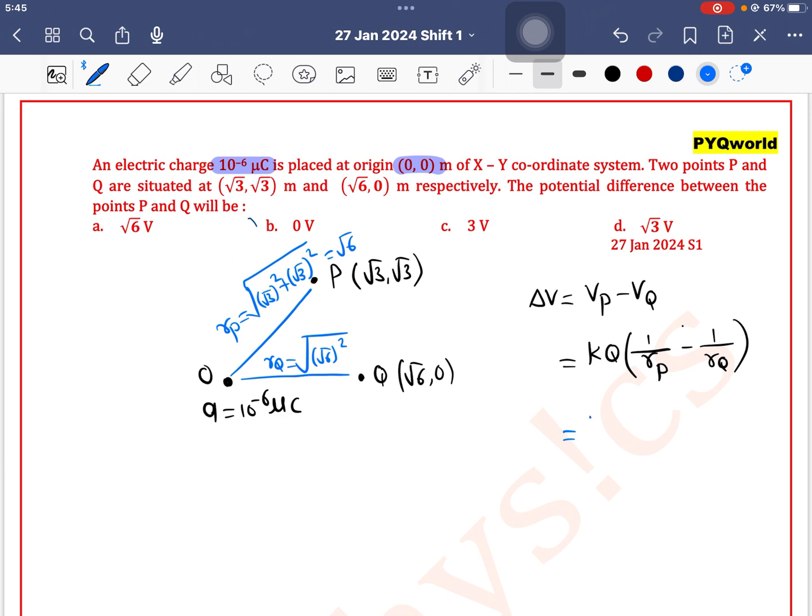So Kq times 1 by Rp is √6, RQ is also √6, so this will get cancelled out. So the answer is 0, so option B is the correct one.